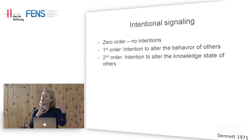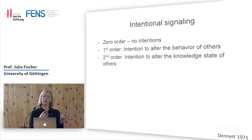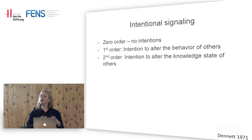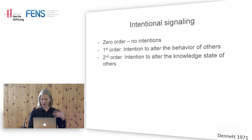This is the theory of mind problem — you have to have some understanding that the knowledge state of another animal or person can be different from yours, and you're trying to manipulate that knowledge state. In that sense, you're intending to provide information, no matter whether this is to your own benefit or to mutual benefit.